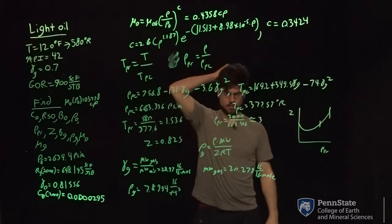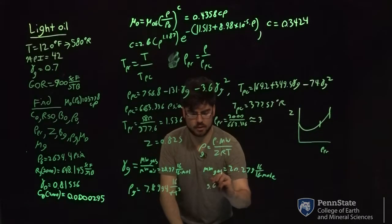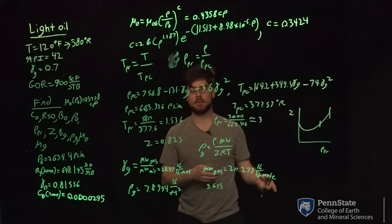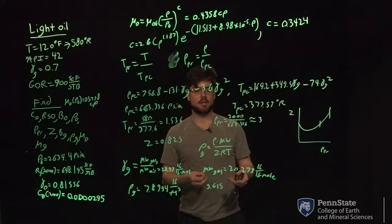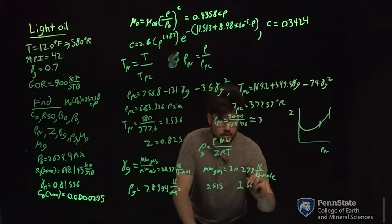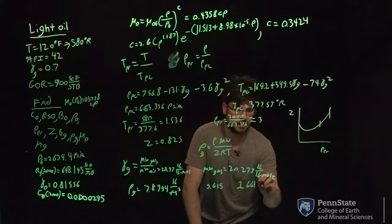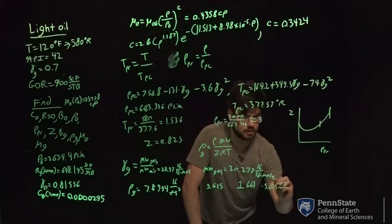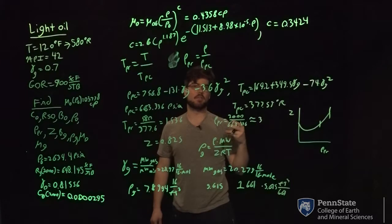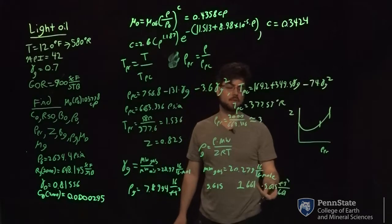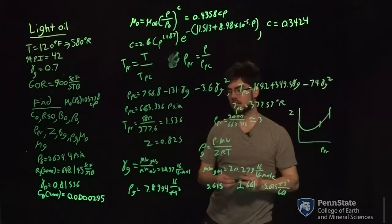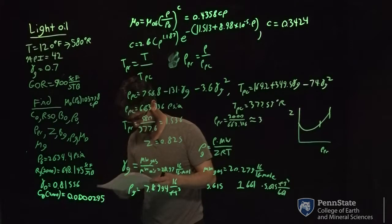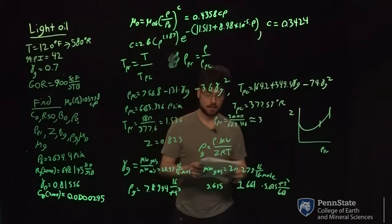You'll also see 5.615 frequently in the notes — it's just a conversion factor between cubic feet and barrels. If you have a value in barrels and want cubic feet, multiply by 5.615. If you have cubic feet and want barrels, divide by 5.615. From here we can find the gas formation volume factor, BG.